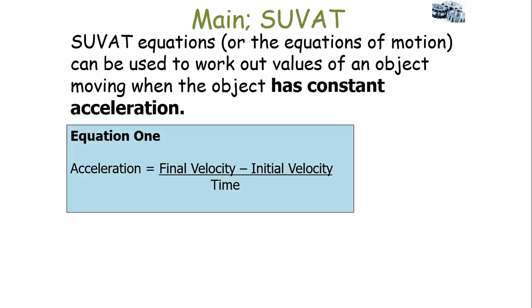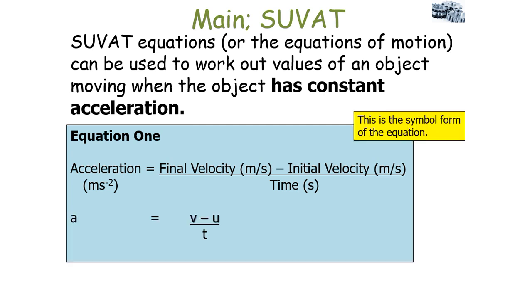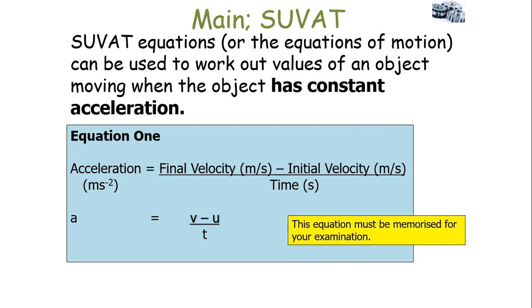The first equation is one you've come across already: acceleration equals final velocity minus initial velocity divided by time. The velocities are in metres per second and time is in seconds, so acceleration has units of metres per second squared. In symbol form, this is: A equals V minus U over T. This is an equation you've got to memorise for your examination.